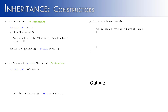If I was going to write the constructor for the character2 class, it's going to look something like this: System.out.println 'character2 constructor', and then we're going to set the level of all characters created from this class as level 10. Then I'm going to create the constructor for the Laserman class, and I'm going to say System.out.println 'Laserman2 constructor', and numCharges is assigned to 100.